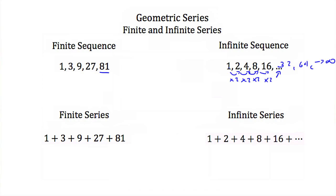If we have a finite series, we take a finite sequence and add all the terms together. If we have an infinite series, we have an infinite sequence and we're adding all of those terms together, but we'd always be adding another term forever. So 1 + 2 + 4 + 8 + 16 + ... means we keep adding 32, then 64, continually adding numbers. The difference is that a finite series has a final term, while an infinite series always has another term being added forever.